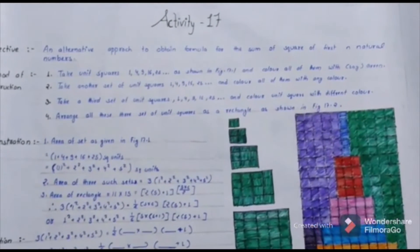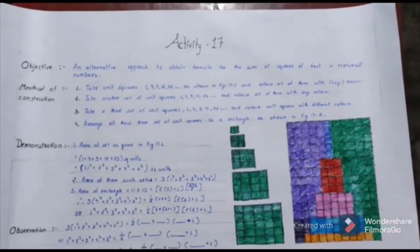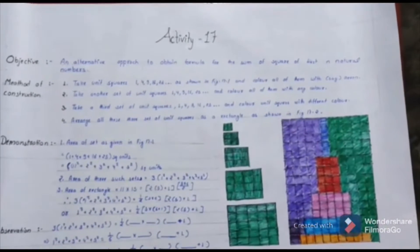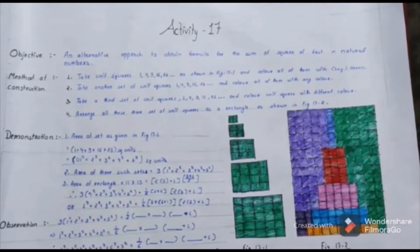First of all, take a set of unit squares: 1, 4, 9, 16, and 25 as shown in figure 17.1, and color all of them with green.